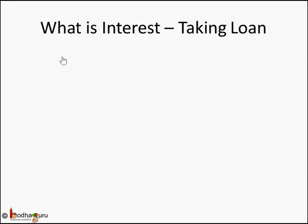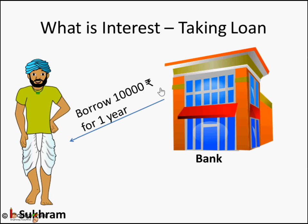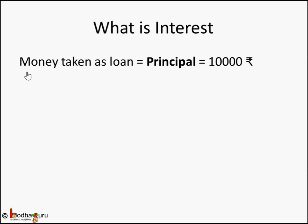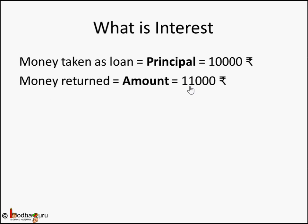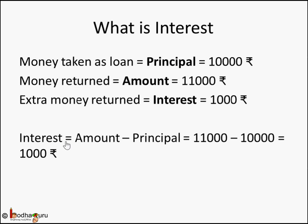To revise what we learned in our last lesson: suppose we are taking a loan from a bank. Sukram is a farmer who took a loan of 10,000 rupees for one year. The bank said sure, and Sukram has to return 11,000 rupees after one year. The money taken as loan is called principal — that is 10,000 rupees. Money returned is called amount — which is 11,000 rupees. The extra money returned, 11,000 minus 10,000, is called interest. So the formula for interest is amount minus principal.